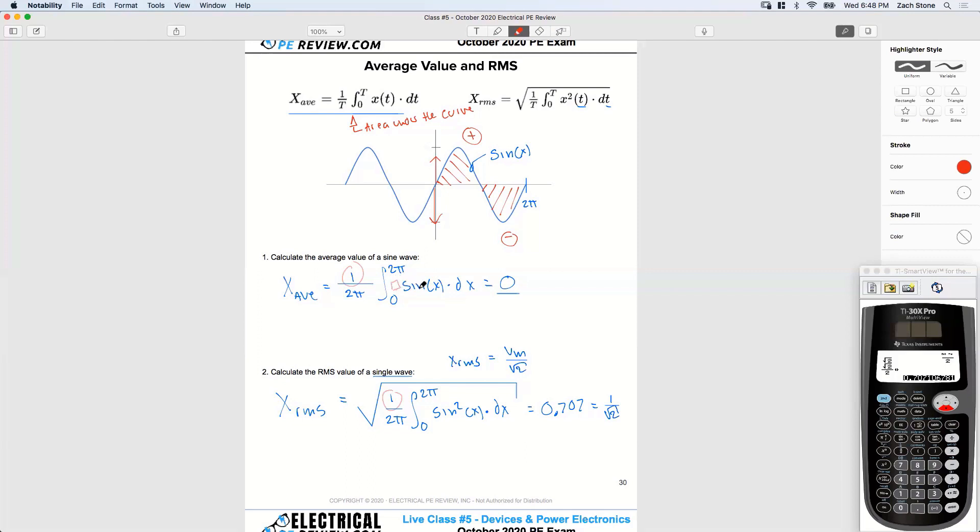So we really used a peak value of 1. So that shortcut of your max value divided by square root of 2 to get your RMS, that actually applies only to a sine wave from this integral. Pretty neat, huh?